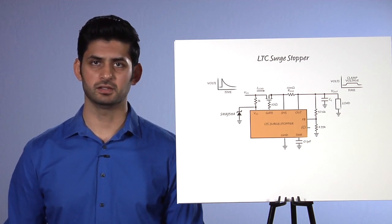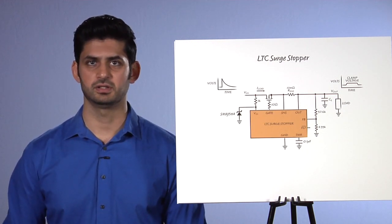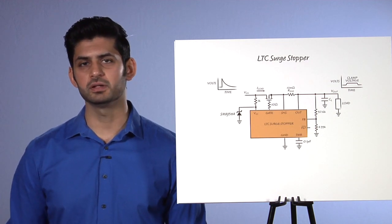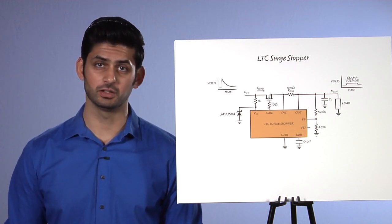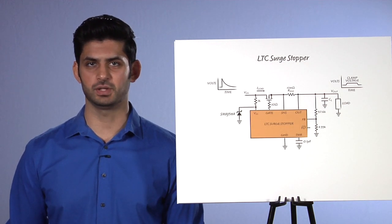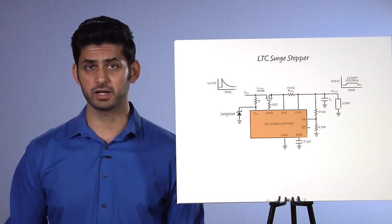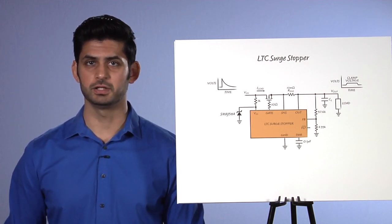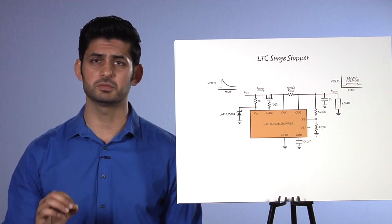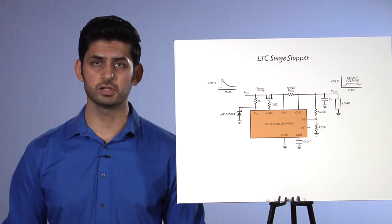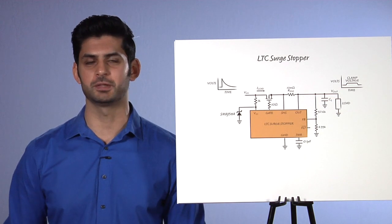This becomes impractical in high availability systems. If the TVS had blown open, it would have taken out the downstream circuitry along with it. Placing multiple TVS devices together in parallel would improve the ruggedness of this protective circuit, but to extend protection to even 100 milliseconds might require multiple devices, which is totally impractical.